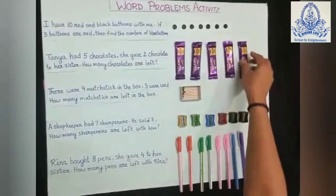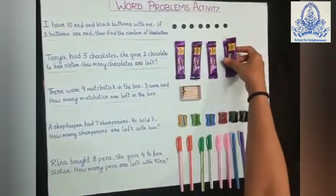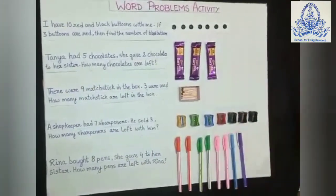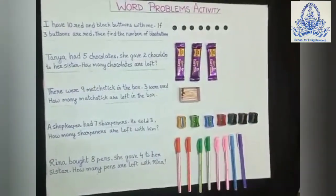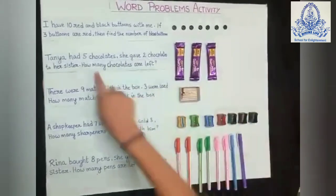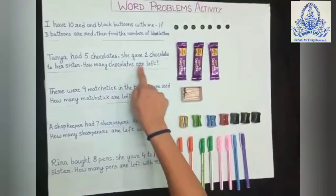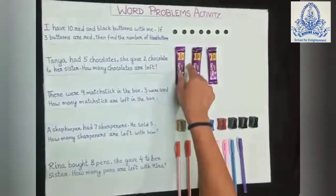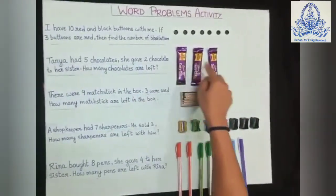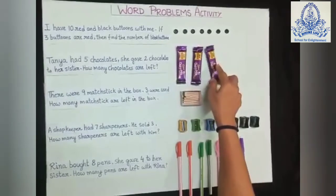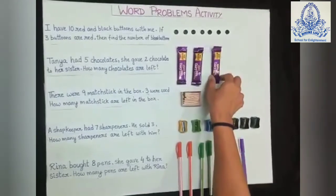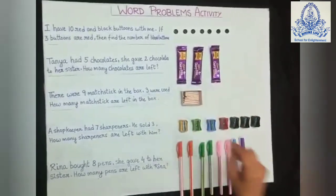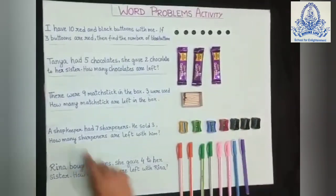I will take out 2 chocolates — she has given them to her sister. How many chocolates are left? Counting: 1, 2, 3. How many chocolates are remaining with Tanya? 3. So the answer will be 3.